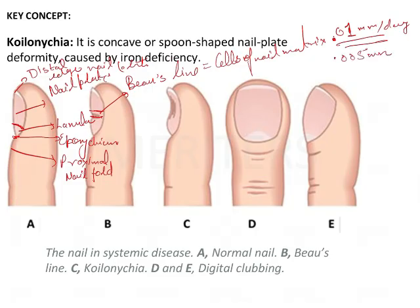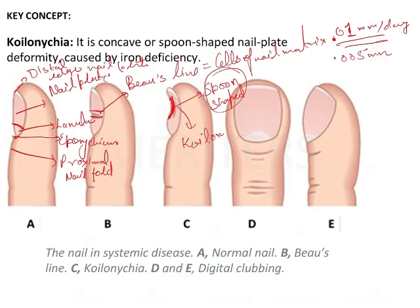The growth rate is basically 0.01 mm per day for the hand nail, and for the toenail it is 0.005 mm per day. Then there are certain concavities which are seen in the nails, and these concavities make the shape spoon-shaped. These spoon-shaped nails are seen in a lot of conditions, and this particular sign is known as koilonychia.